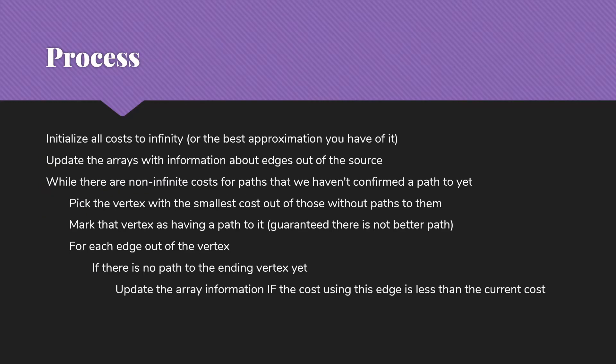So the basic process that we're going to use is this. We'll initialize all our costs to infinity, or the best approximation we have of infinity, given our implementation. We're going to update our arrays with information about edges out of the source. We're going to say, to begin with, the best we know about the vertices that are directly connected to our source is that they come from the source with the cost of that edge.